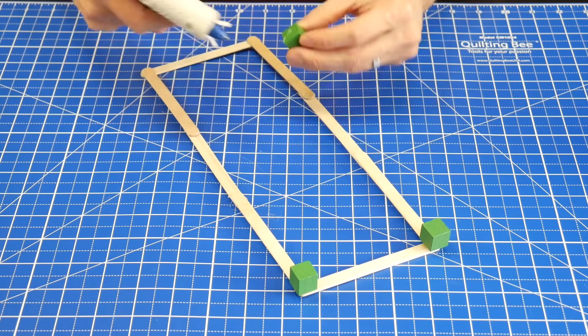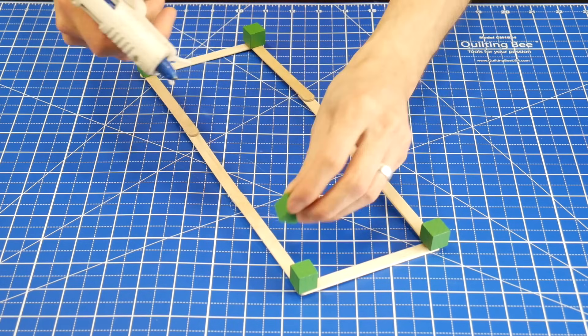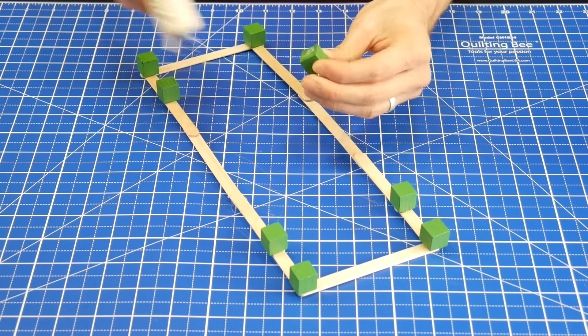Next glue on eight craft cubes. Four go in the corners, and then the other four are spaced an inch or two apart from the first ones.